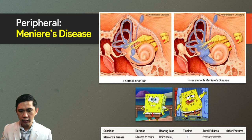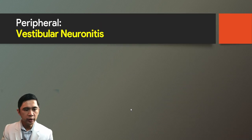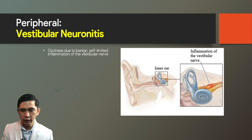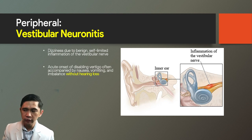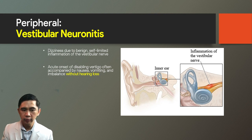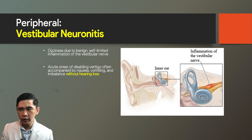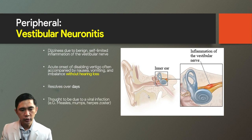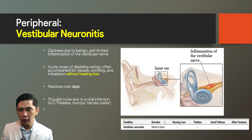Vestibular neuronitis is dizziness due to benign self-limited inflammation of the vestibular nerve. It presents as acute onset of disabling vertigo often accompanied by nausea, vomiting, and imbalance, but without hearing loss—because only the vestibular nerve is affected, sparing the cochlear nerve. It resolves over days and is thought to be due to viral infection such as measles, mumps, or herpes zoster. Vestibular neuronitis: duration hours to days, no hearing loss, no tinnitus, no aural fullness.